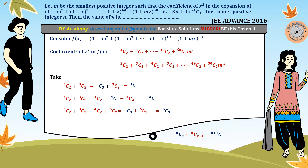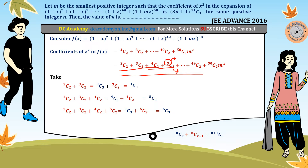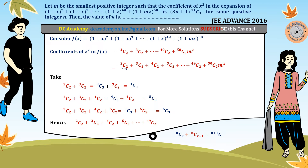Observing the pattern, adding terms up to ⁴⁹C₂ gives ⁵⁰C₃. Therefore, the coefficient of x² equals ⁵⁰C₃ + ⁵⁰C₂ · m².